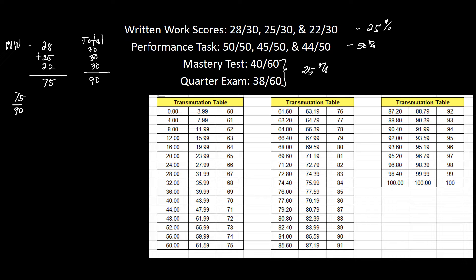What we do next is divide the two and then multiply by the 25 percent component, which is 0.25. So we compute 75 divided by 90, times 0.25, times 100 percent to convert it into a percentage. That gives us 20.83 — let's round it to the hundredths place.